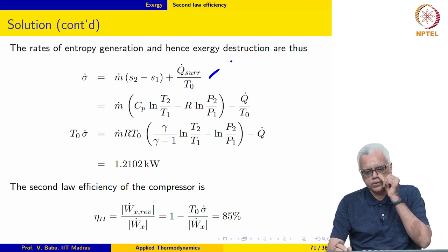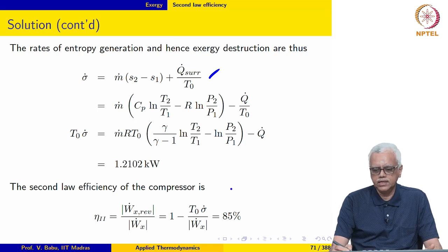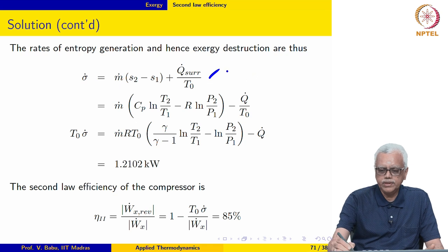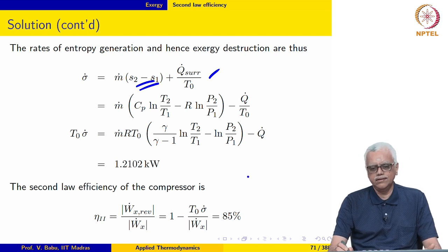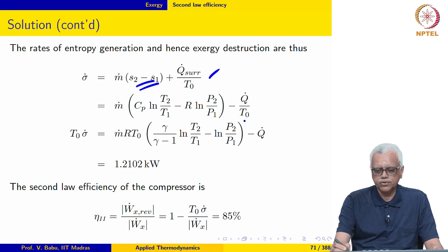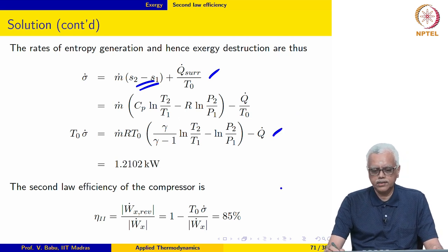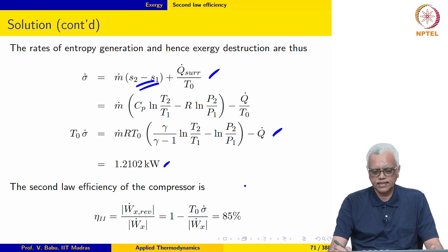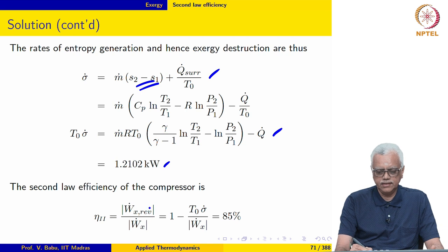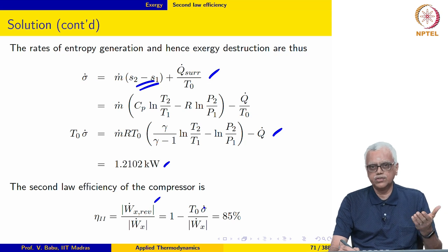Sigma dot is m dot times S2 minus S1, plus Q dot surroundings divided by T naught. Q dot surroundings equals minus Q naught, and S2 minus S1 may be evaluated using the TDS relations because it is an ideal gas. Proceeding with this, we get the lost work expression, and the lost work itself comes out to be 1.2102 kilowatts.